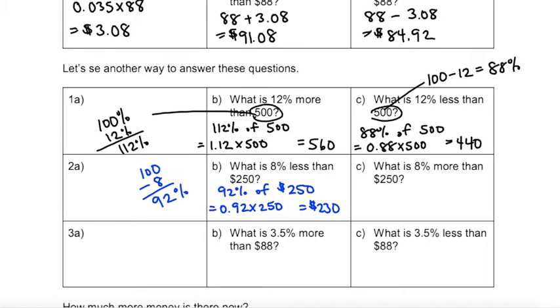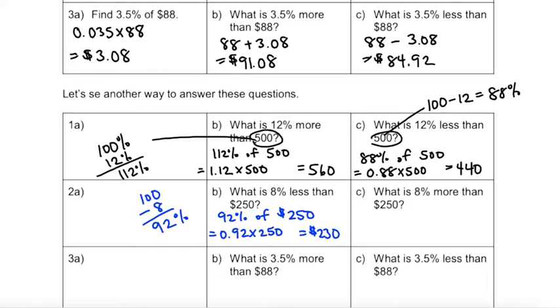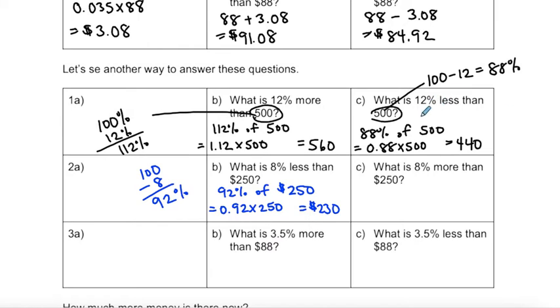Again, the same amount that we found up there. If you're not getting the same amount, then you know you're doing something wrong. And 8% more, I start with my 100% of my original amount. I'm adding 8 this time to give me 108%. You might be able to do this in your head, the more times that you do this.